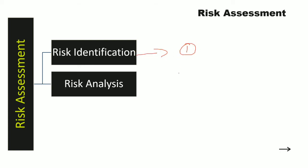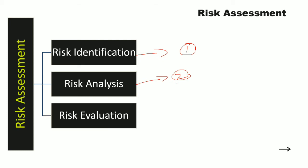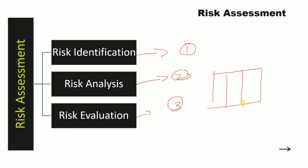The second part is risk analysis — first you identify the risk, then you analyze it. Then the third part is risk evaluation. So these three things — risk identification, risk analysis, and risk evaluation — we will understand each one by one, and what the difference is between them.